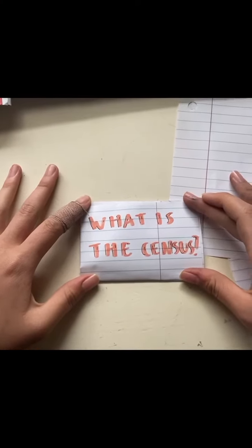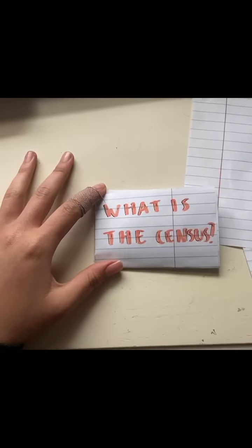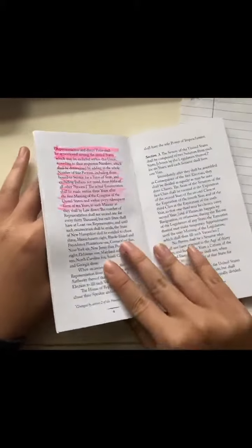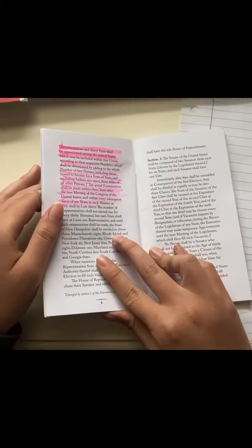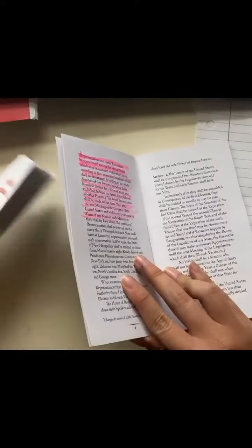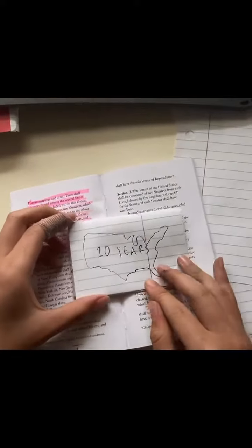So what is a census and why does it matter? The census is actually in the Constitution. It's long, but in Article 1, Section 2, it basically says that every 10 years, every living person in the U.S. should be counted.